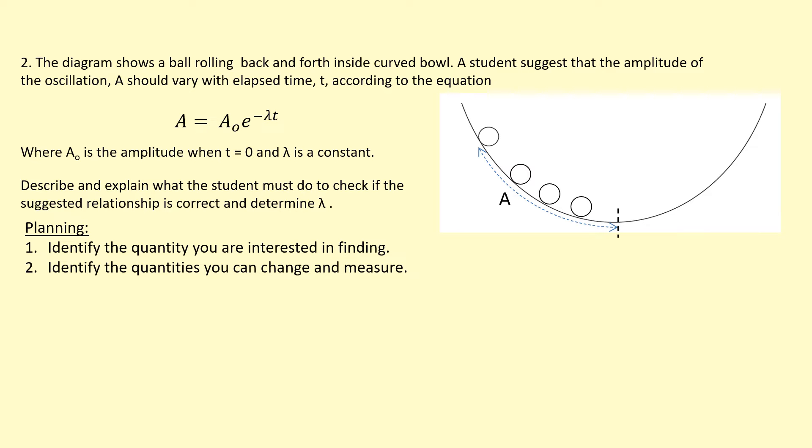Secondly, identify the thing that we're going to change. As time changes, we're going to measure the amplitude, capital A, at different points in time. Things that need to be kept constant: if we repeat this experiment, we're going to make sure we release it from the same initial amplitude. We're going to keep the surface the same and the ball the same.